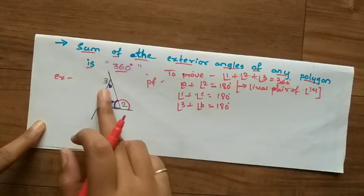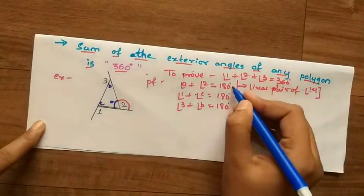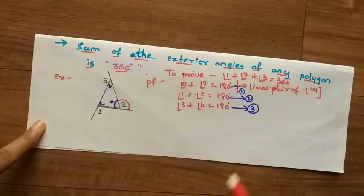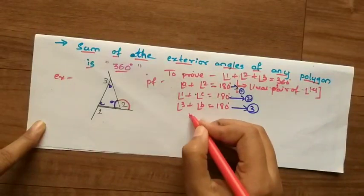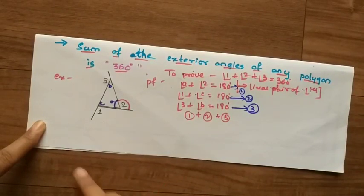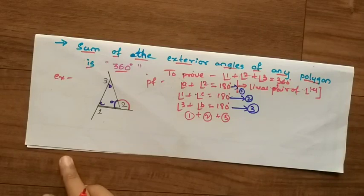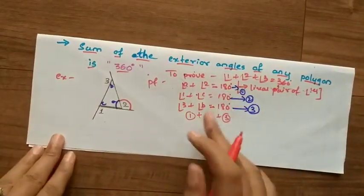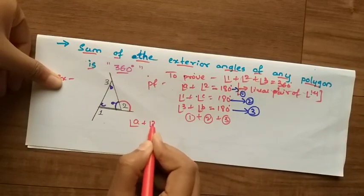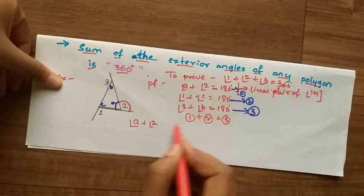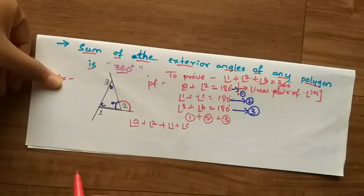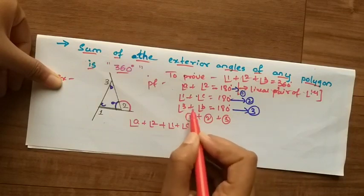Label these as equation 1, equation 2, and equation 3. Now add equation 1 plus equation 2 plus equation 3. When adding equations, add the left-hand side and right-hand side separately. The left-hand side becomes: (angle A + angle 2) + (angle 1 + angle C) + (angle 3 + angle B).